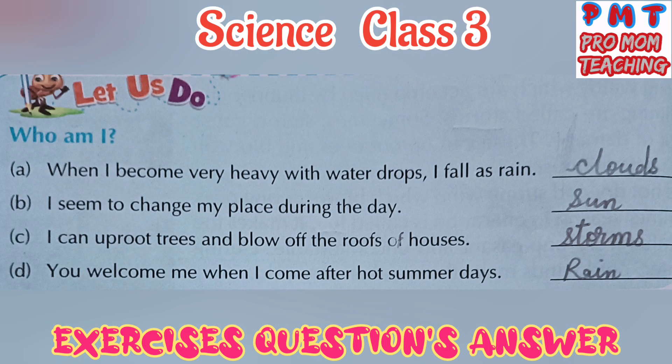Who am I? A. When I become very heavy with water drops, I fall as rain. I am cloud. B. I seem to change my place during the day. I am sun. C. I can uproot trees and blow off the roofs of houses. I am storm.